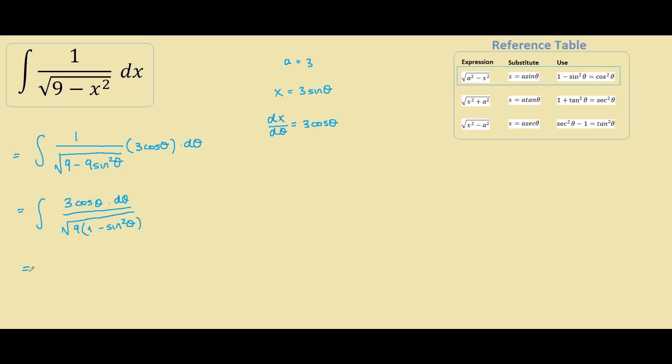So we have 3 cos theta times dθ over the square root of 9, and instead of 1 minus sin squared theta, we have cos squared theta.